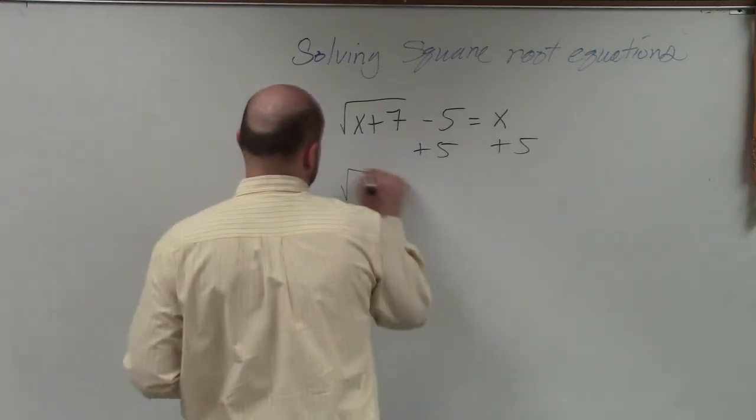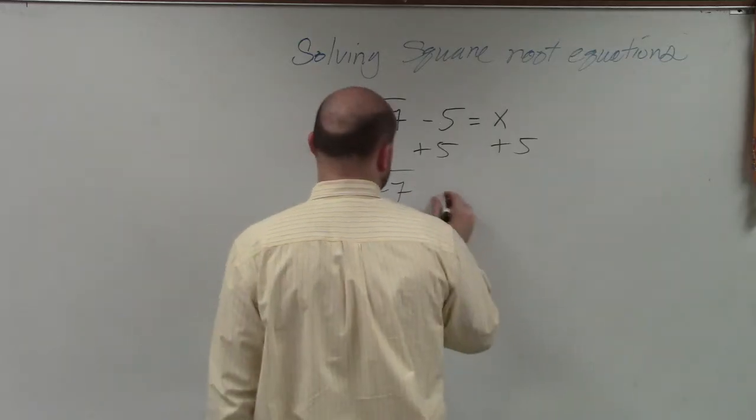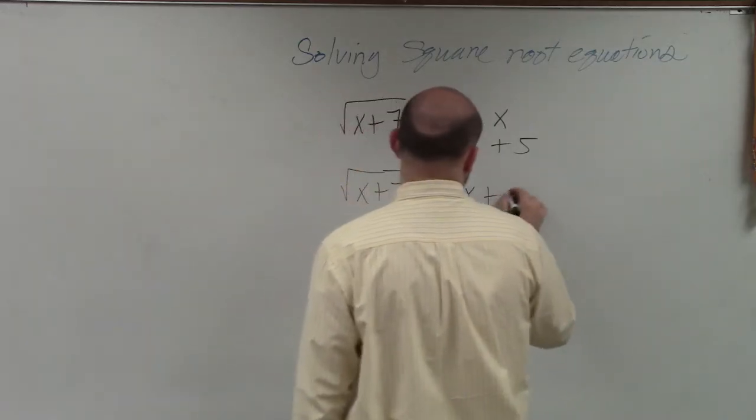Now the next thing, Justin, is we have x plus 7, or the square root of x plus 7, is equal to x plus 5.